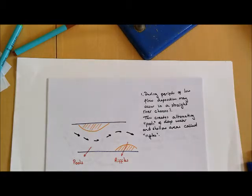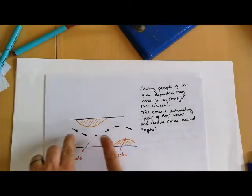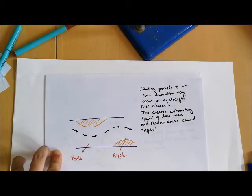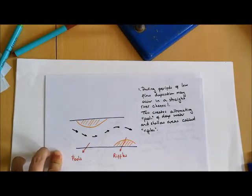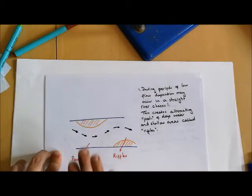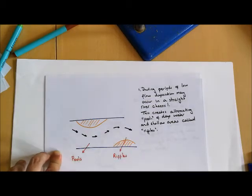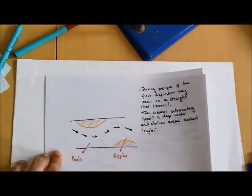During periods of low flow, deposition may occur in what is previously a straight river channel. We can see that here. So we've got a straight channel, we've had two areas of deposition. What this does is it creates alternating pools of deep water and shallow areas called riffles. So we've got our pool here away from the deposition and our riffle being shown by this area very close to that area of coarse material that's been deposited during low flow.